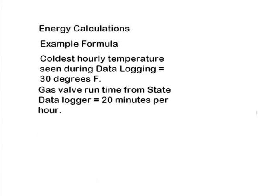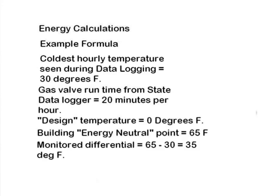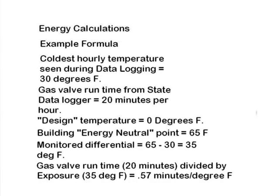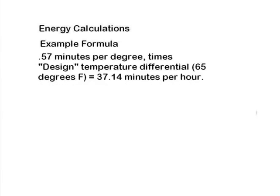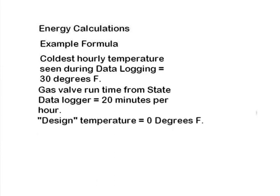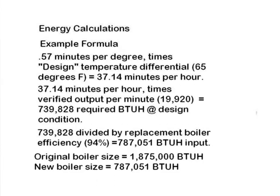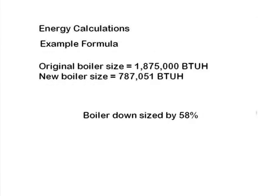Now that you have determined the net output of the boiler for a given period of heating demand, you can extrapolate this information to local design conditions and be relatively assured of having an appliance that will run considerably more efficiently due to proper sizing. As you can see, we've reduced the size of the boiler significantly — by a factor of 58%. This will result in a greater runtime fraction at design condition, less wear and tear from short cycling, and a substantial energy savings during operation.